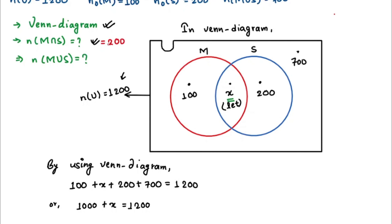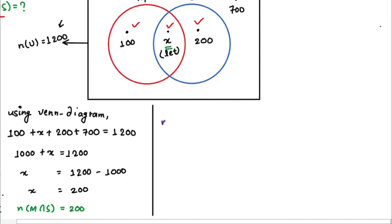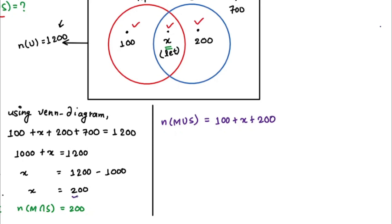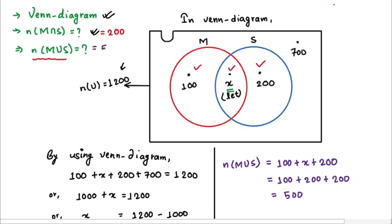For students who like at least one subject, N(M ∪ S), we add the three parts inside the circles: maths only, both, and science only. So N(M ∪ S) = 100 + X + 200. Since X = 200, this becomes 100 + 200 + 200 = 500. Therefore, 500 students like at least one subject, and our third part is done.